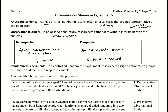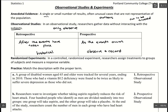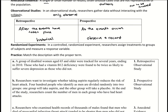With both retrospective and prospective studies, the researchers are only writing down information — they have no other effect on the subjects. Randomized experiments are where the researchers do have an effect; they can manipulate the environment of the subjects to see if there is some result.